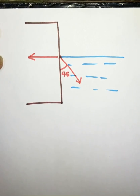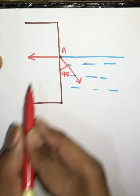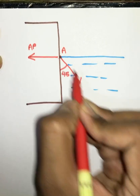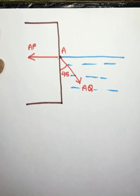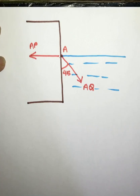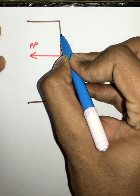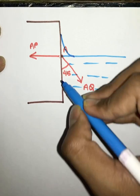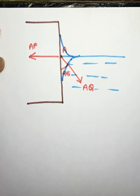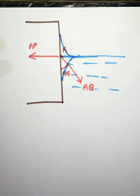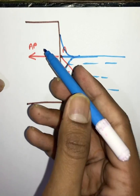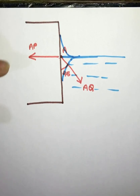Let's name this molecule A, this force AP, and this force AQ. Due to these various forces, water makes different types of angles with the solid — sometimes a steep downward angle, sometimes an upward angle, or sometimes it stays flat. This angle of water with the solid is known as the angle of contact.